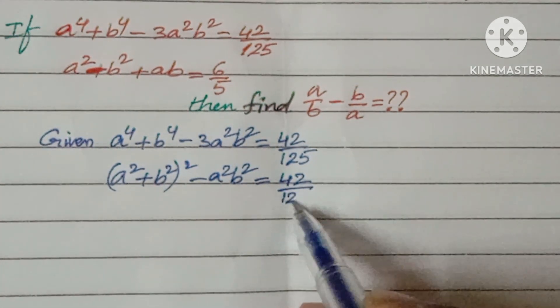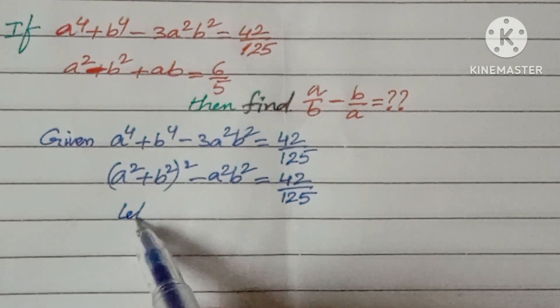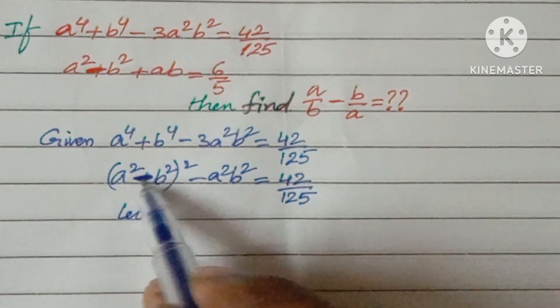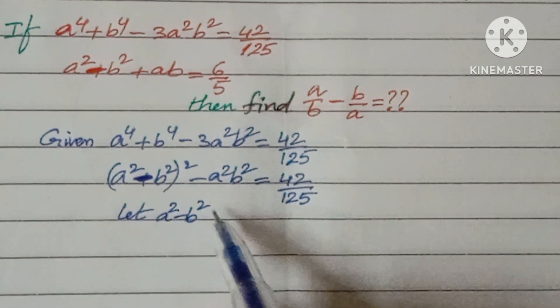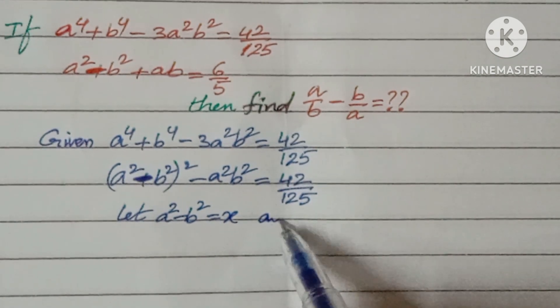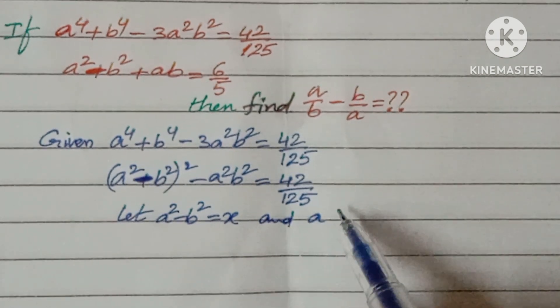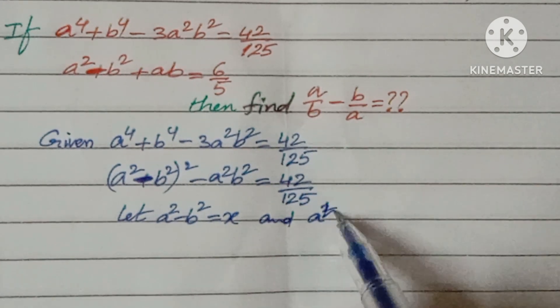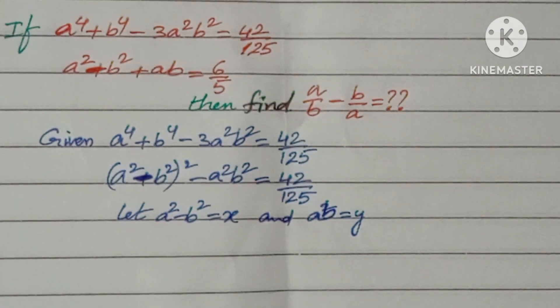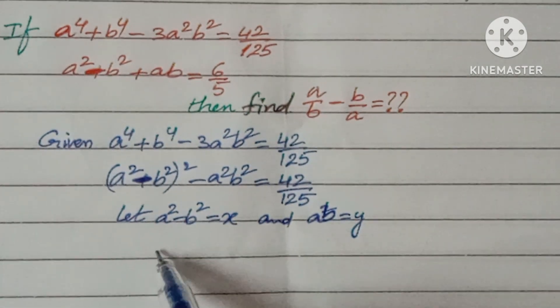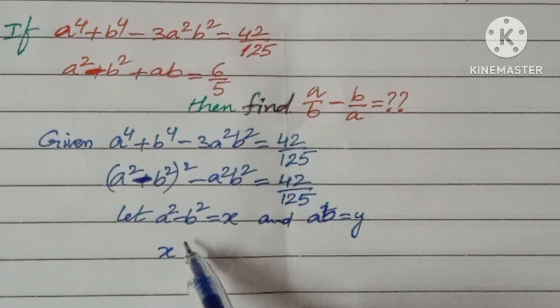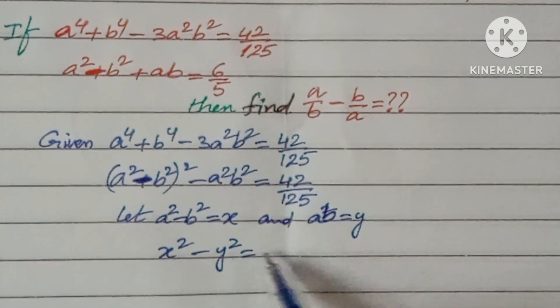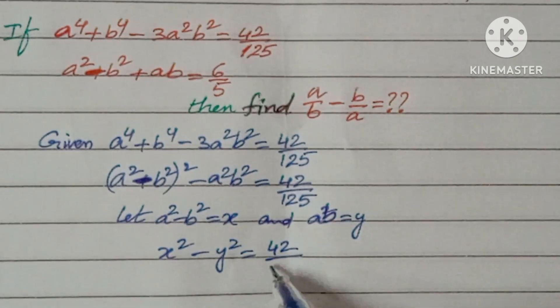Now let us take a² + b² = x and ab = y. Then the equation will become x² - y² = 42/125.